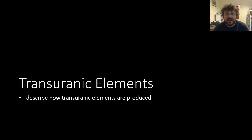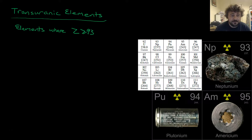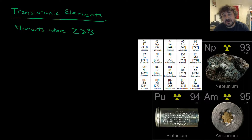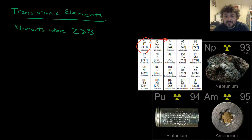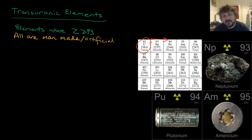Let's have a look at what transuranic elements are. Essentially, these are elements where Z, the proton number or atomic number, is equal to or higher than 93. On our periodic table, that is pretty much everything beyond uranium. Now, all of them are man-made — they're all artificial. There are no natural elements in this list.